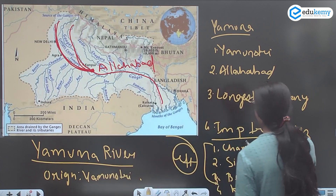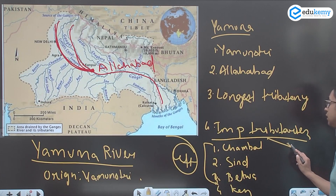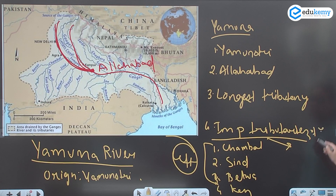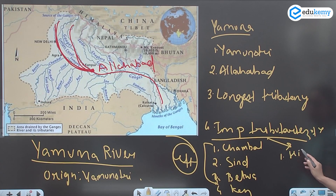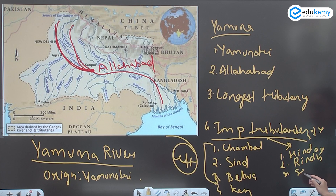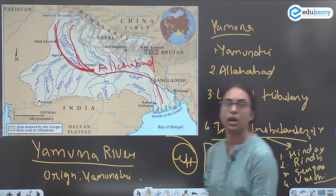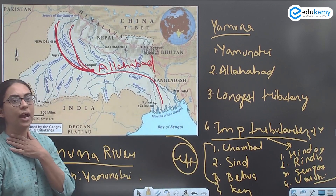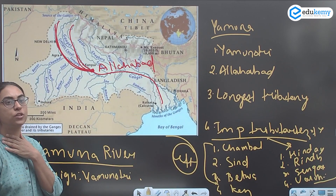The right bank tributaries of Yamuna are Hindan, Rind, Sengar, and Varun. These are the right bank tributaries of Yamuna.